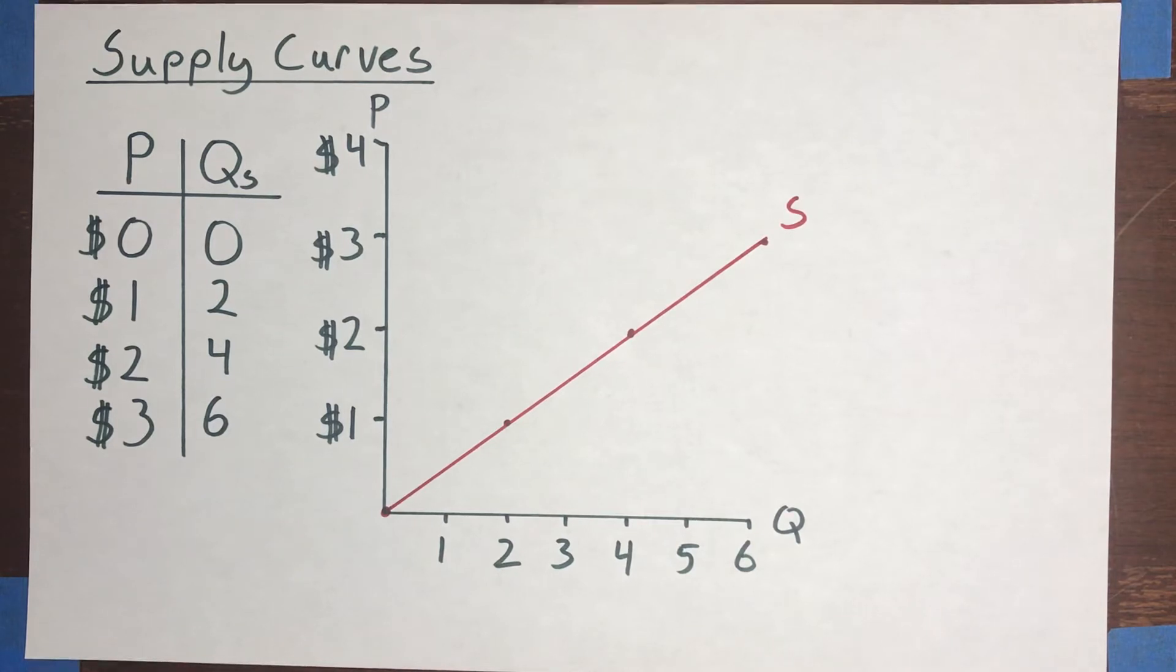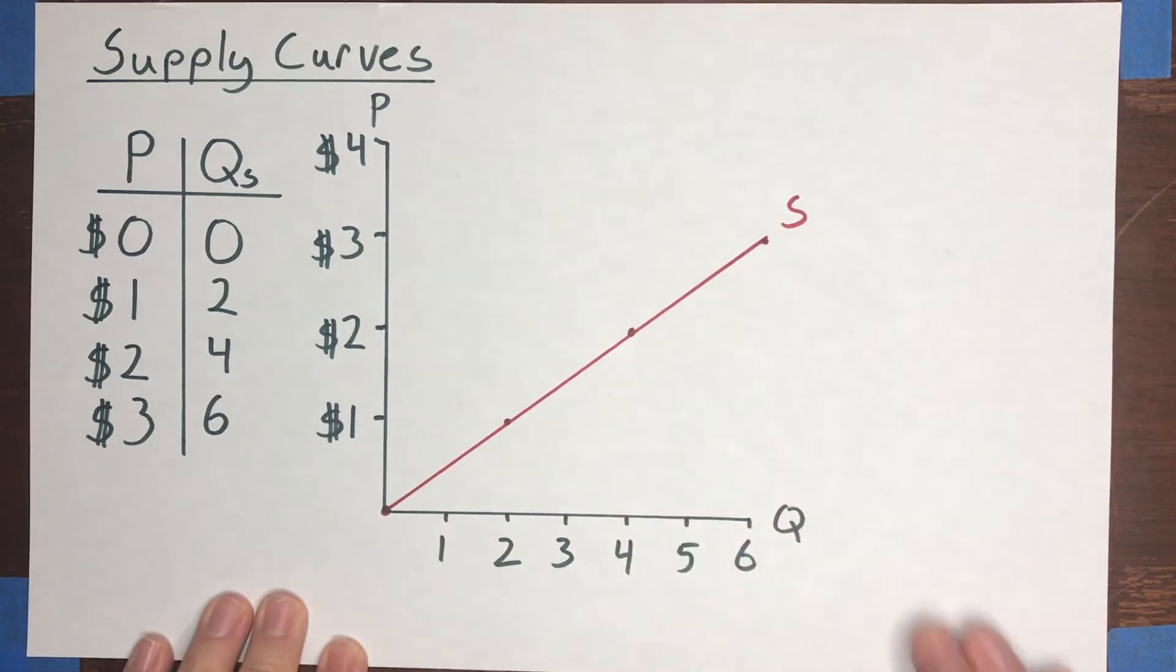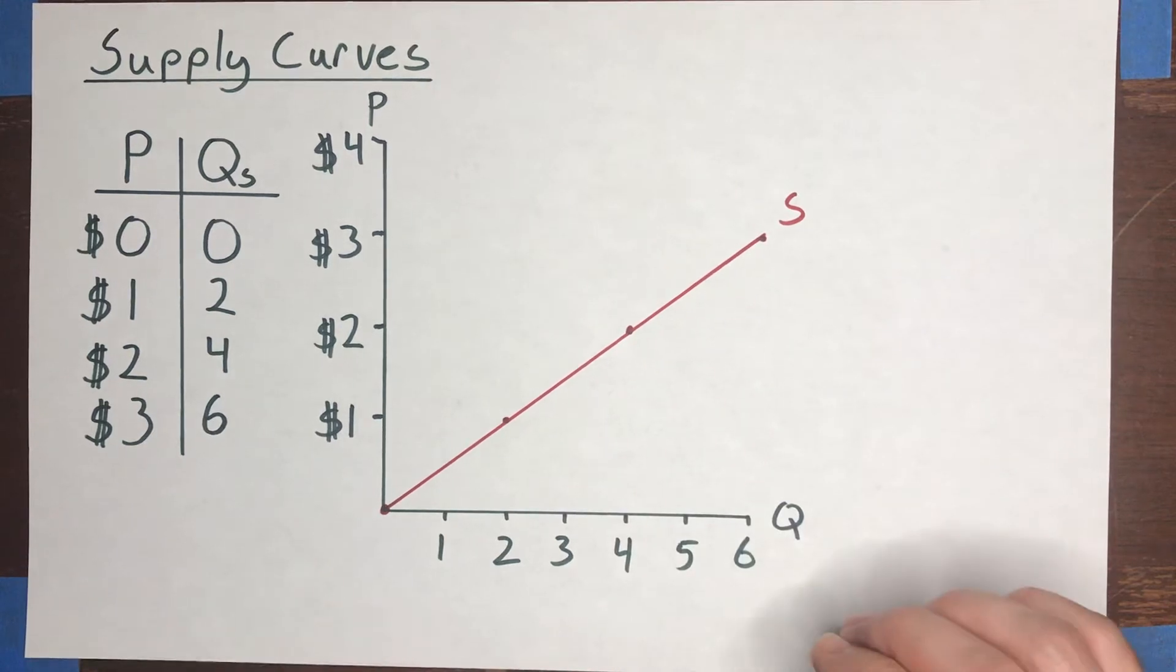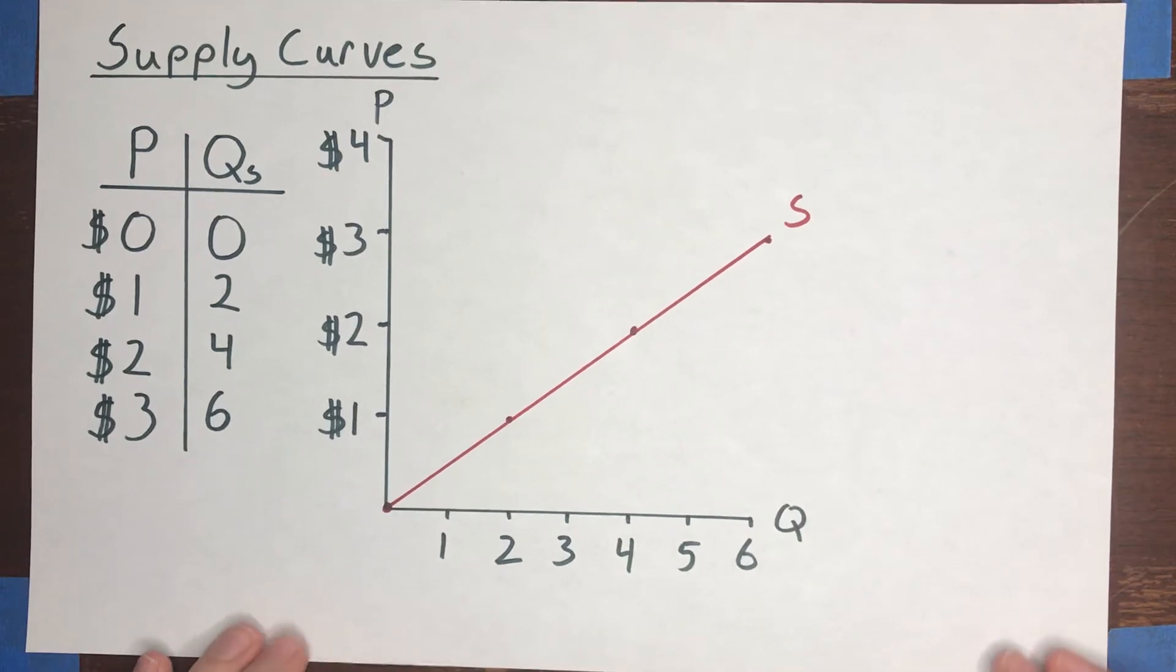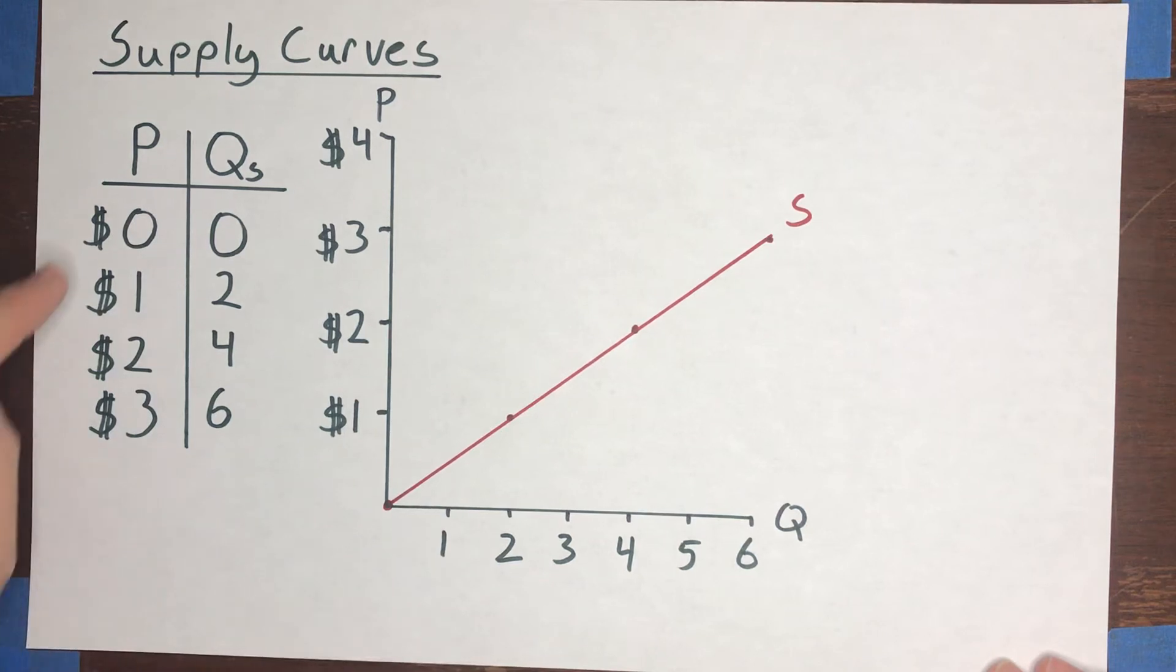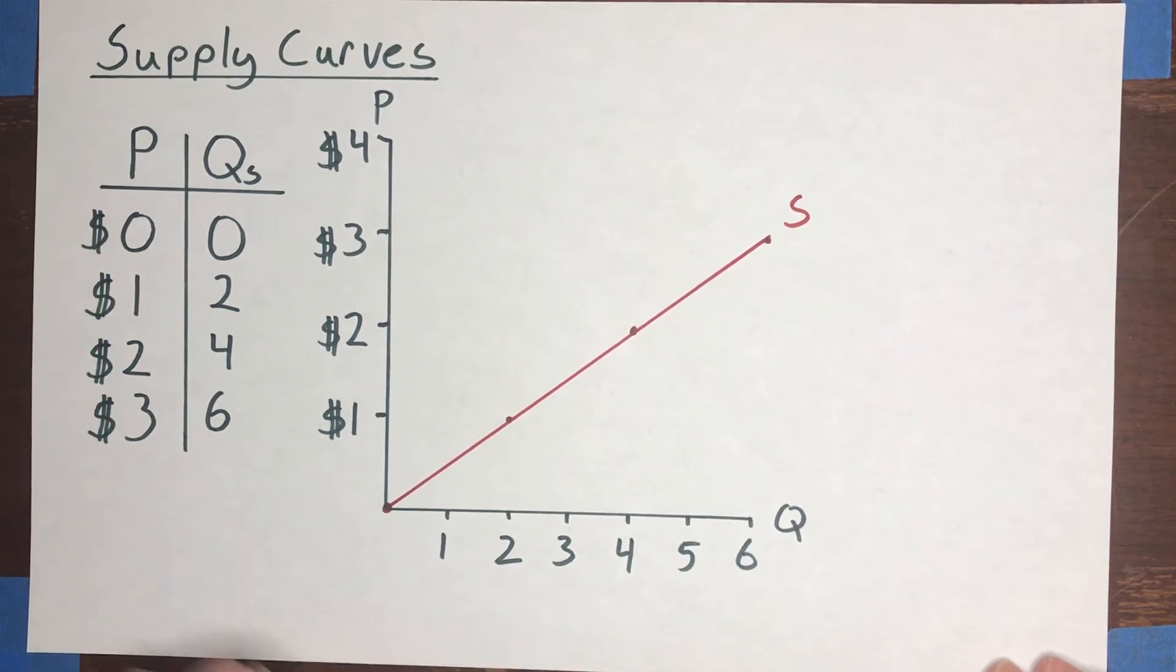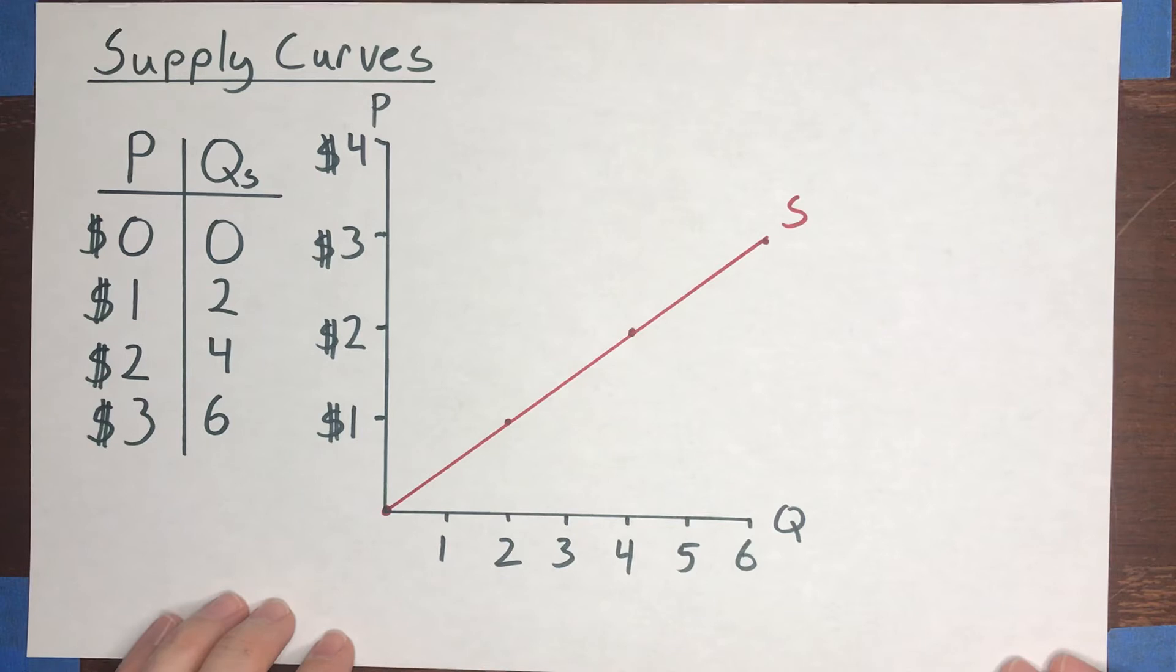Now you can get at an upward sloping supply curve in at least two ways. One would be different preferences among the sellers for the goods that they have. So here we had some sellers who valued their cans of soda fairly high so that you'd have to offer them a high price in order for them to give them to you. And then other people were willing to sell at a relatively low price because presumably they don't have as much of a taste for soda as the high price sellers.